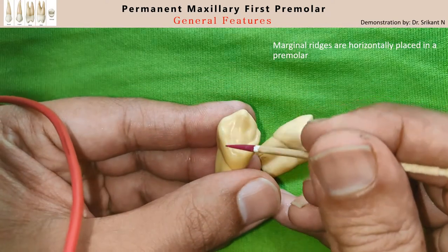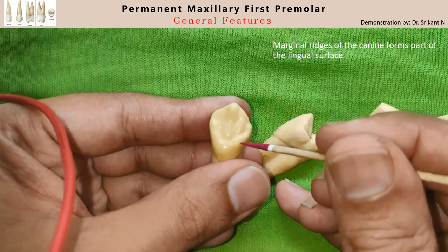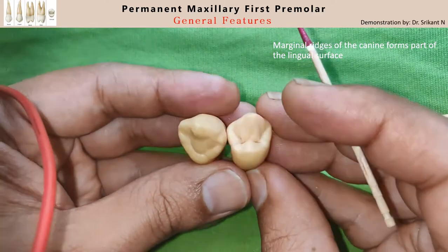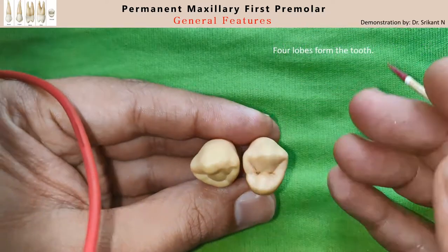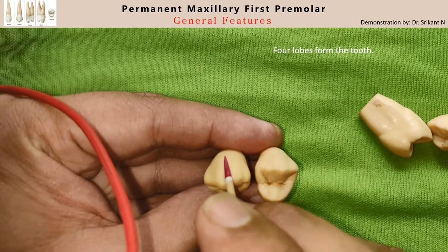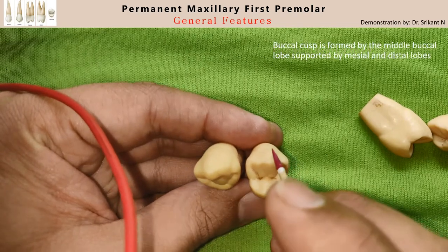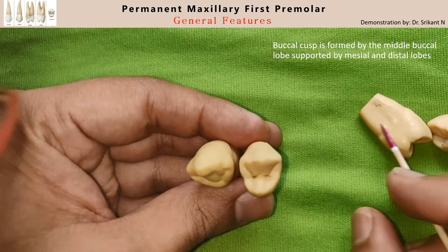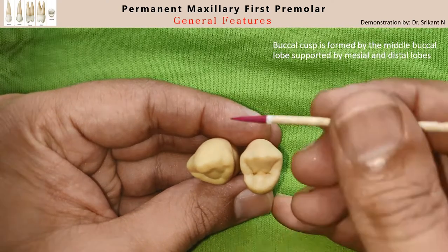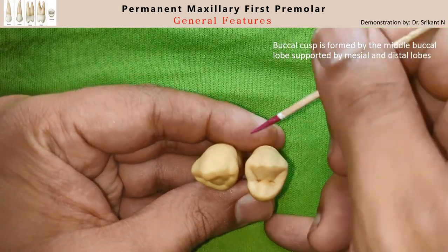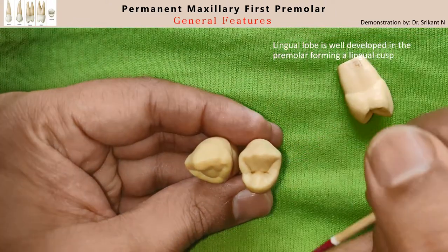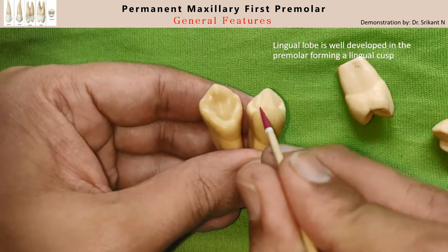The marginal ridges of the canine are actually forming a part of the lingual surface. There are four lobes from which these teeth are formed. The central buccal lobe of the canine has a similar architecture in the premolar also, and this prominent buccal cusp is supported by two more lobes on either side.